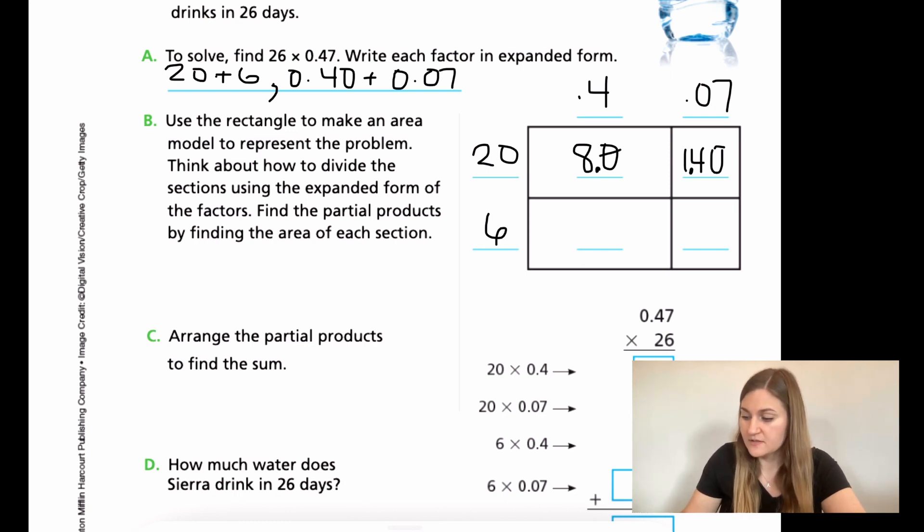Alright, now I'm going to do my 6 and my 0.4. 6 times 4 is 24. Again, just one number behind the decimal. So I'm going to do one number behind the decimal as well. And then 6 times 7. 6 times 7 is 42. There's two digits behind my decimal, the zero and the seven, which means I need two digits behind my decimal as well. So actually my decimal is going to go out in front and it's going to be 0.42.